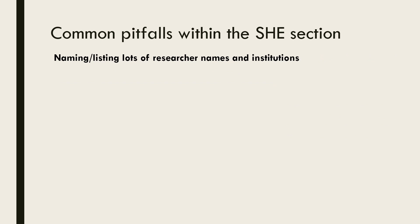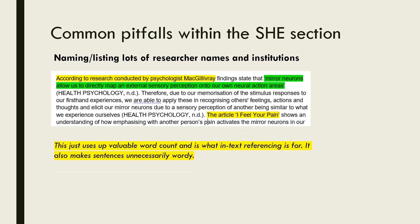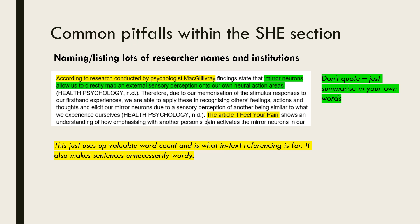The next common pitfall is over-naming researchers and their institutions. Not only does it make sentences longer and impact clarity, but it uses up valuable word count. This is what in-text referencing is for — there's no need to name everybody in the body of the text. Something else to avoid that uses valuable word count is quoting. It is your original work and ideas that are being assessed. Quoting an article doesn't mean you understand it. Instead, summarise in your own words and in-text reference.